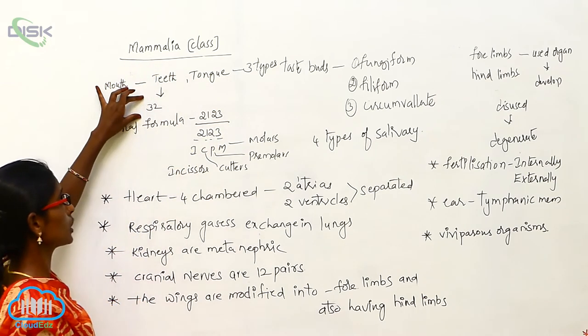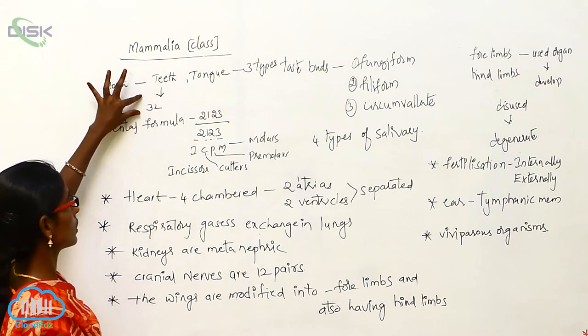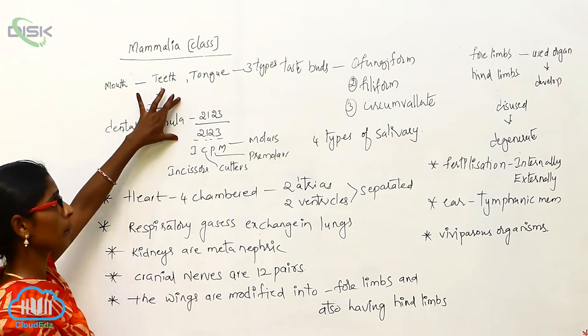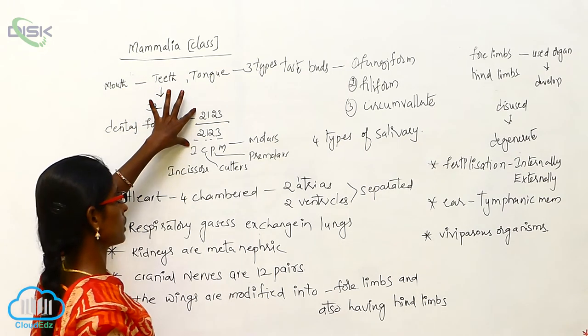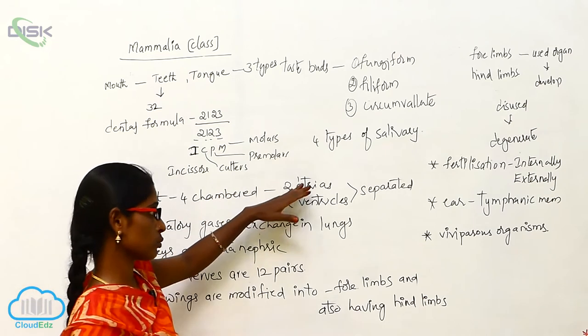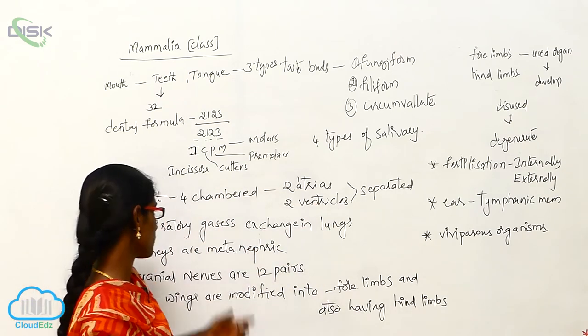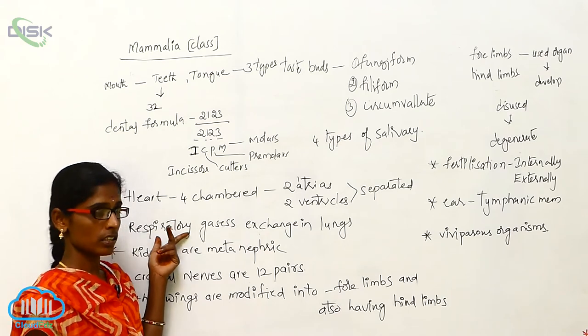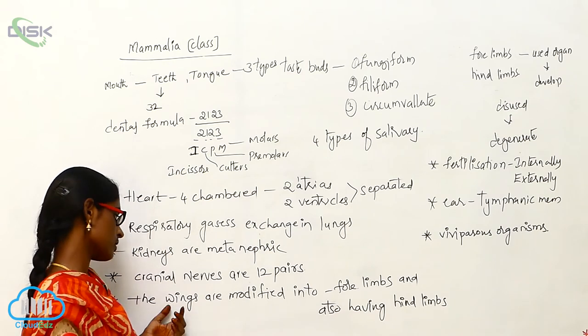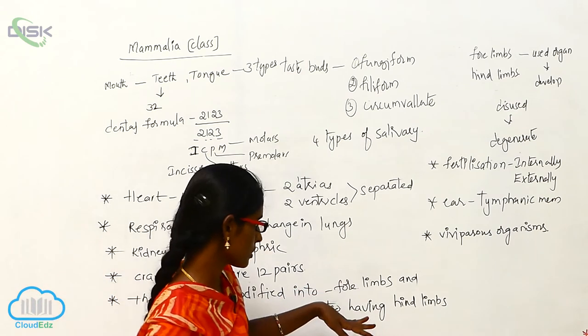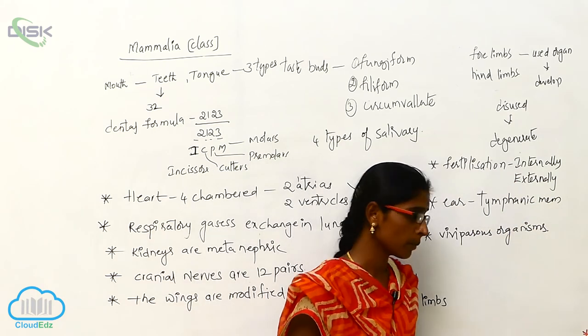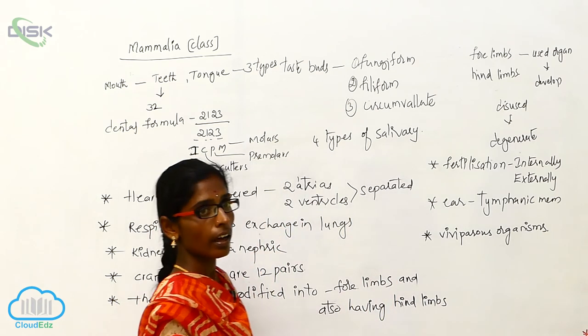Teeth are 32 in number. The dental formula for human beings or mammalians is 2123 by 2123 based on the ICPM formula. Heart is four-chambered with two atria and two ventricles separated. Respiratory gases exchange in lungs. Kidneys are metanephric type. Cranial nerves are 12 pairs. Wings are modified into forelimbs and also having hind limbs. Fertilization internally and externally. Ear has tympanic membrane. These are viviparous organisms.